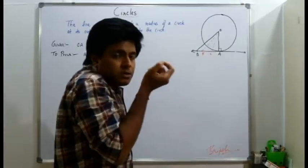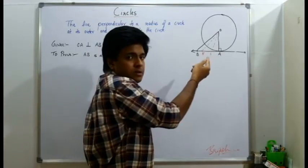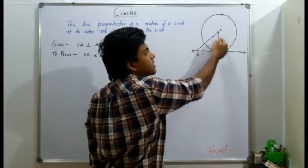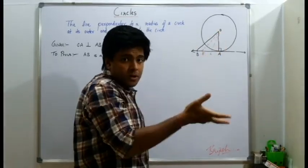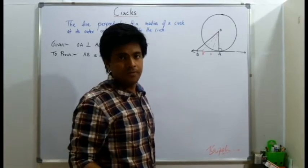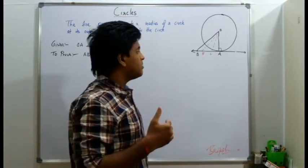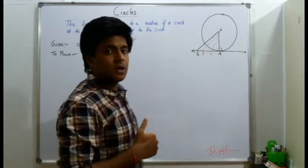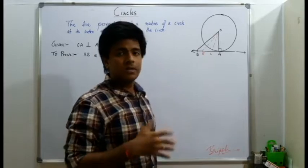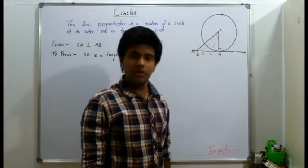If there is a single point of contact between a line and a circle and from that point of contact we have a radius which is perpendicular, then obviously it has to be a tangent. This whole thing we will write. I hope you are understanding what I am trying to convey. I will write this and let's see if you understand everything.